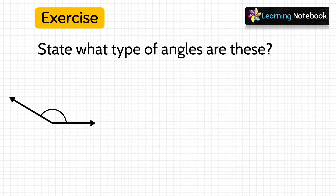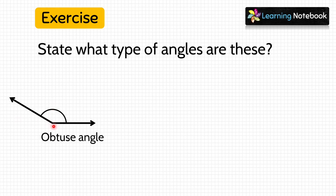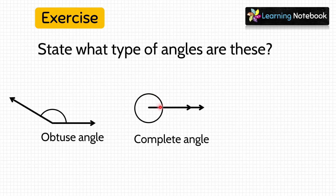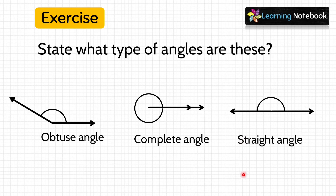Now let's see the next figure — here this angle is greater than 90 degrees but less than 180 degrees, so this means it is an obtuse angle. In the next figure, this angle is showing a complete circle, so this means it is a complete angle. And the last figure — we can easily find that it is a straight angle.